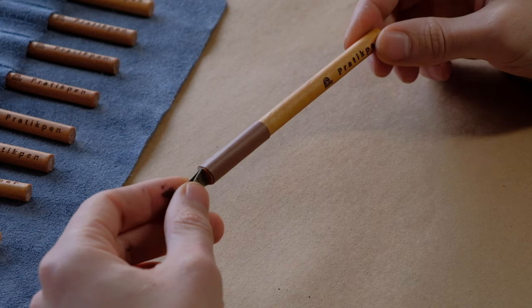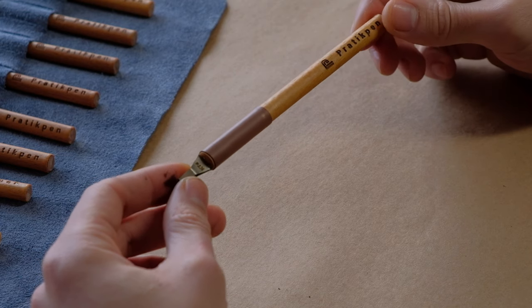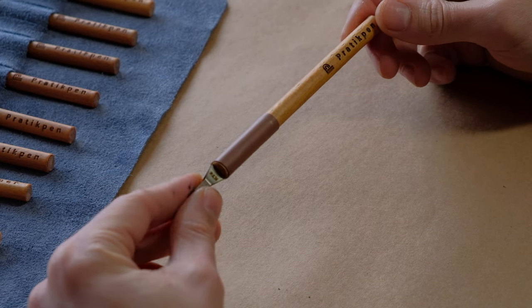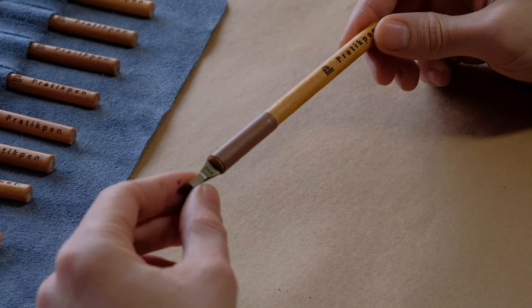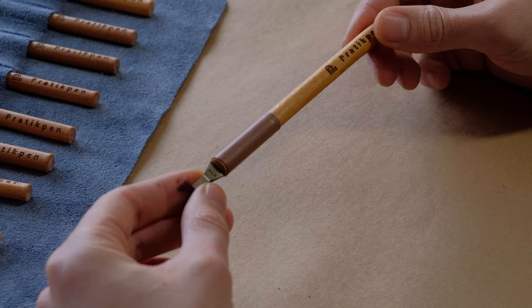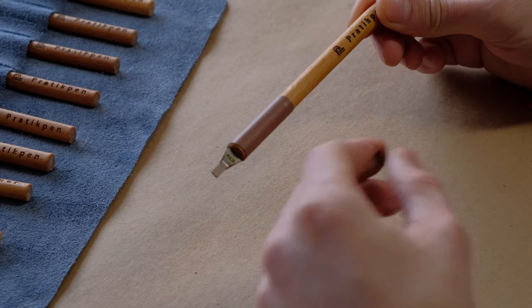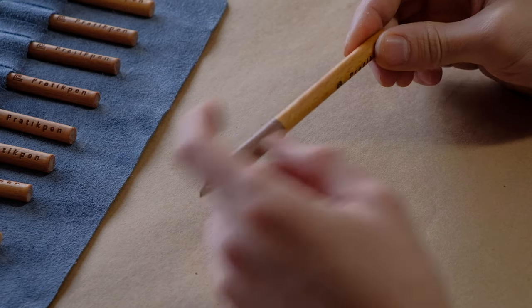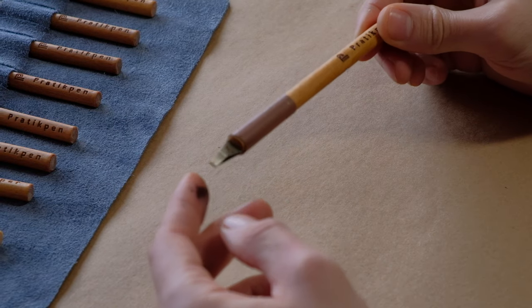So this is what Pratik Pen looks like. It is kind of a replica of automatic pens even though it's not really a replica. And the main difference between Pratik Pen and automatic pen is that automatic pen is made out of a plastic body and a metal tip, where Pratik Pen is made out of wood with a metal nib.